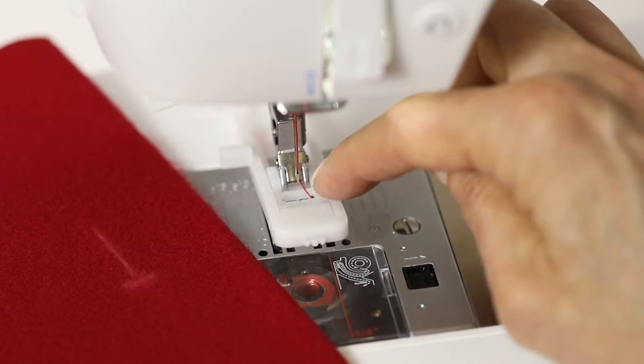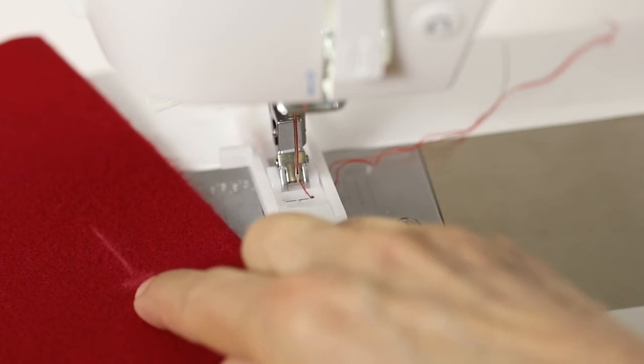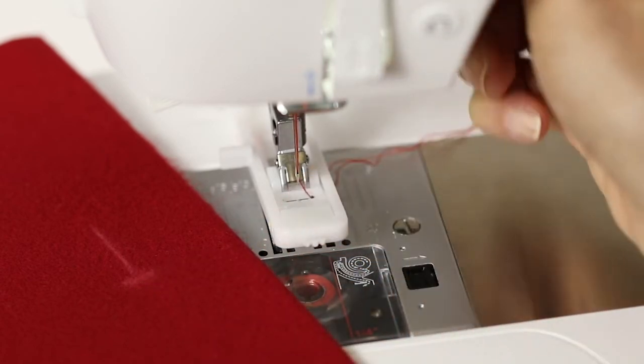After placing your upper thread through the hole in the top of the presser foot, bring your fabric under the foot so the line you drew is lined up inside the hole and visible through the hole in the front of the presser foot.